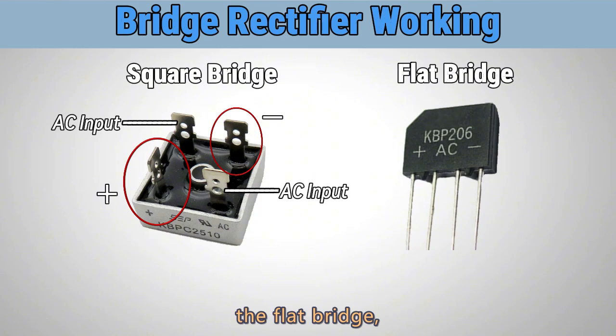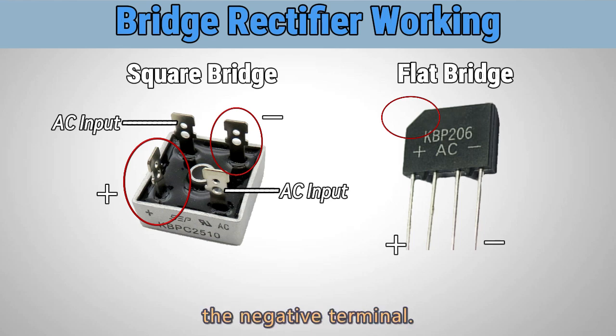In the case of the flat bridge, there is a notch indicating the positive terminal, while the opposite side serves as the negative terminal. The middle pins function as the AC input.